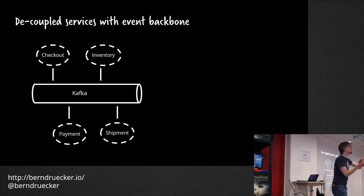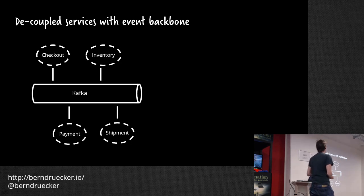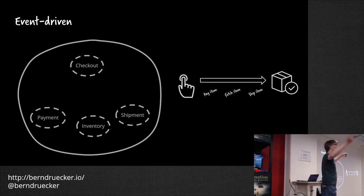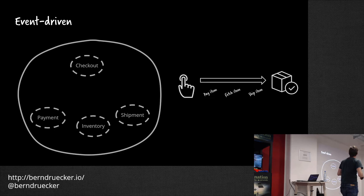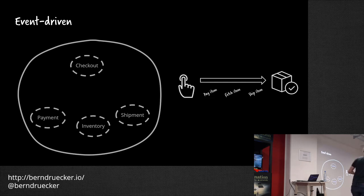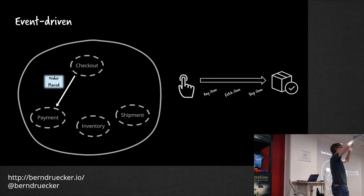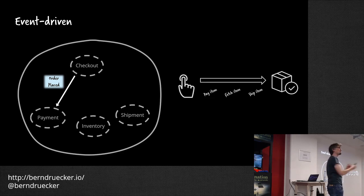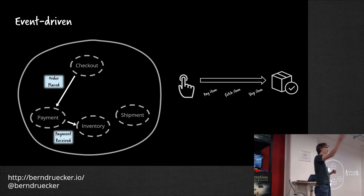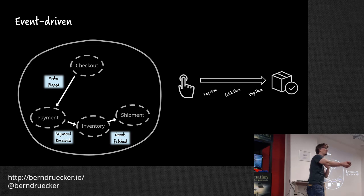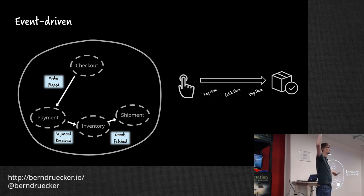In an event-driven approach, you could implement this end-to-end business process like this: the checkout service emits an 'order placed' event, payment recognizes it and retrieves payment, then emits a 'payment retrieved' event, inventory knows to fetch the goods, and shipment knows to ship. This is how you can implement a choreographed business process in an event-driven way.